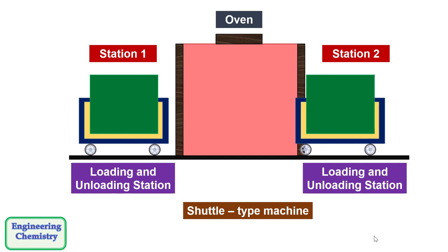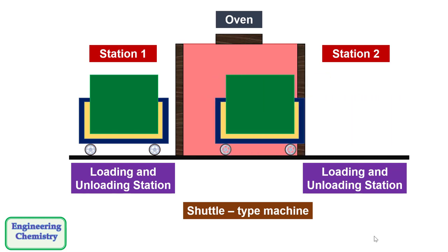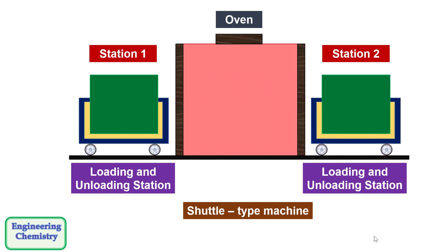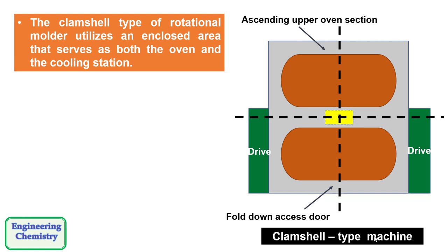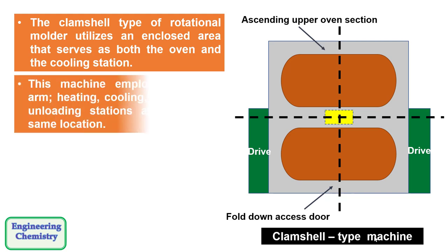A mold at station 2 is moved into the oven from the opposite end. The clamshell type of rotational molder utilizes an enclosed area that serves as both the oven and the cooling station. This machine employs only one arm. Heating, cooling and loading unloading stations are all in the same location.